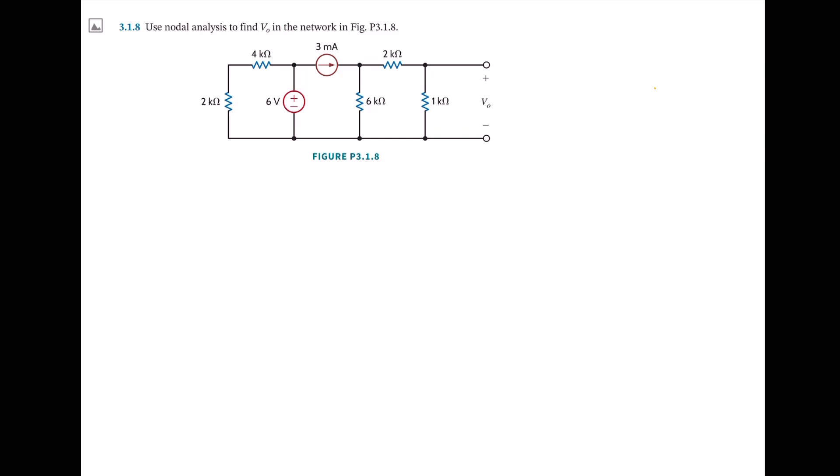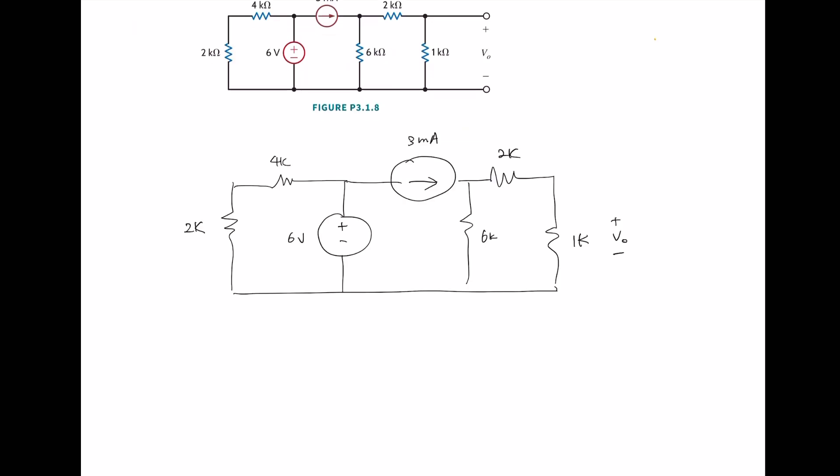I'm gonna redraw this circuit a little bit larger. We want to use nodal analysis. Now we need to identify the nodes. So we have a node, one node right here, which is positive 6 because it's a plus. And we have another node here. I'm gonna call it V1. We have another node here. I'm gonna call it V2. And finally, this is the node with the V0.